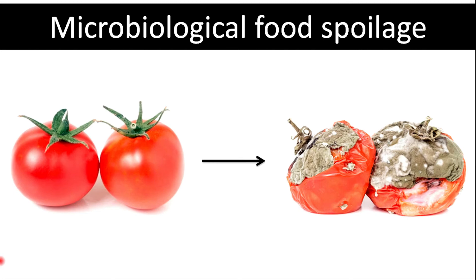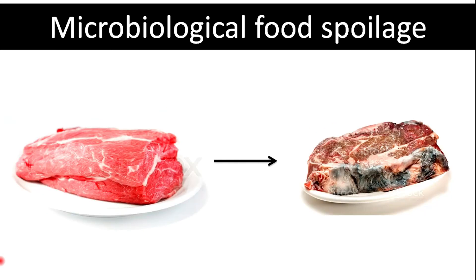Microorganisms have the ability to multiply at high rates when favorable conditions are present. Prior to harvest, fruits and vegetables generally have good defense mechanisms against microbial attack. However, after separation from the plant, they can easily succumb to microbial proliferation. Similarly, meat upon slaughter is unable to resist rapidly growing microbes. The pathogenicity of certain microorganisms is a major safety concern in the processing and handling of foods, as they produce chemicals in food that are toxic to humans. Their growth on foods may also result in undesirable appearance and off-flavors.